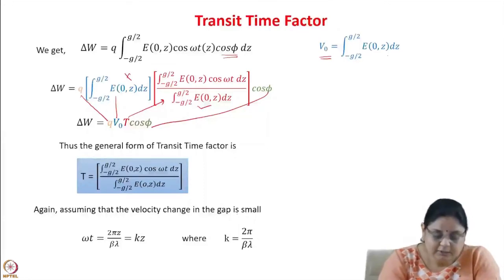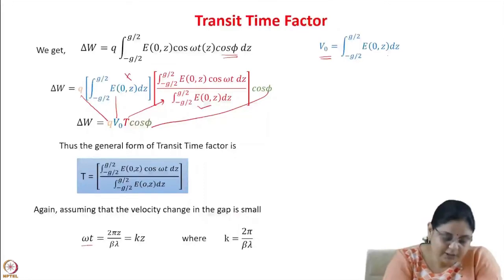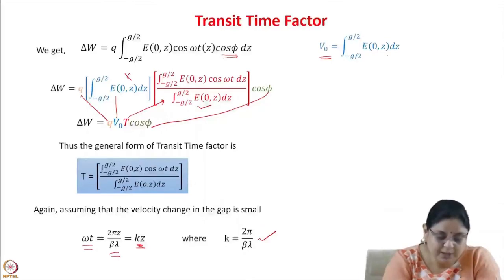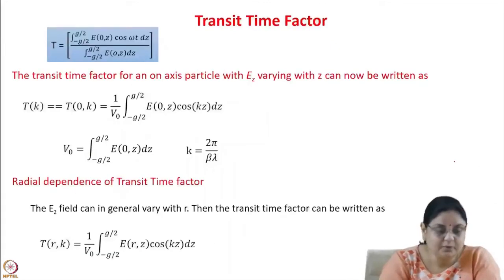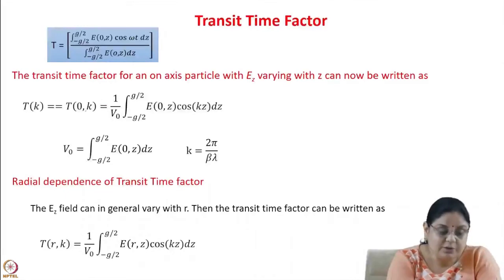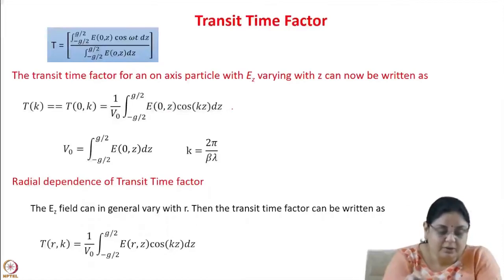This is the general form of the transit time factor when the electric field is not constant along z but varying with z. It is simply this integral divided by the voltage. Again assuming the velocity change in the gap is small, we write ωt = 2πz/βλ and substitute kz = 2π/βλ, so that ωt = kz.